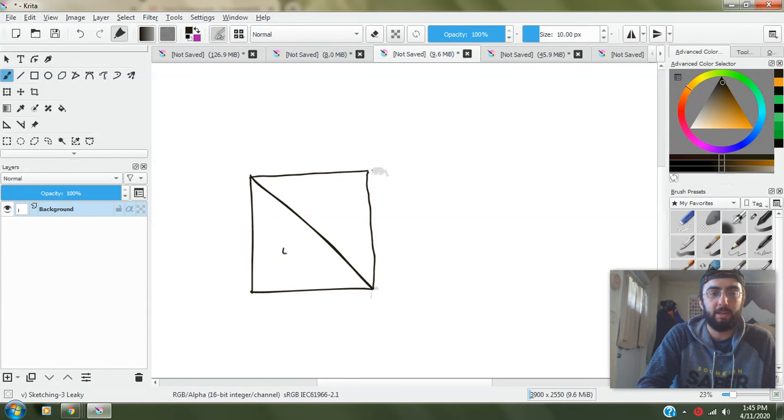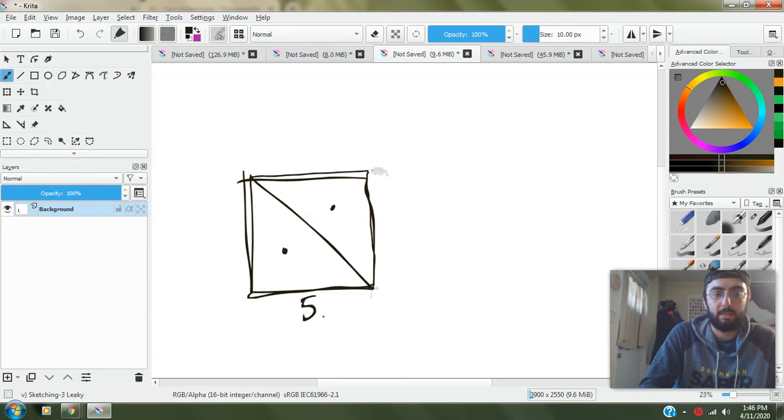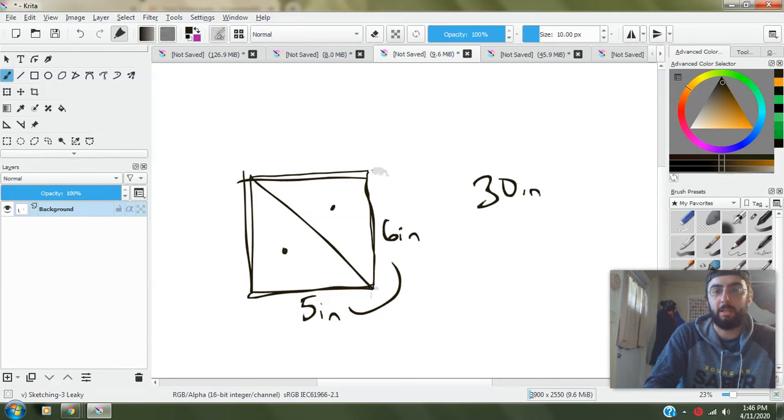So we have this triangle right here and we have this triangle right here. If we're finding just the area of the rectangle, we would do the base, let's say five inches by the height, let's say six inches. You would do five times six equals 30 inches, right?